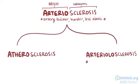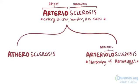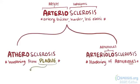Arteriolosclerosis is any sort of hardening of small arteries and arterioles. This is easy to remember since the 'olo' in the middle of the word indicates small arterioles. Atherosclerosis is the hardening of any artery — usually medium to large sized arteries — caused by the buildup of plaque. These plaques are called atheromatous plaques and happen in the innermost wall of the blood vessel, called the tunica intima or endothelium.